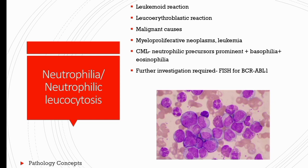When blasts in the blood and marrow are 10 to 19%, it is called the accelerated phase. When blasts are more than 20%, it is called the blast phase of CML. All patients with characteristic findings on complete blood count and peripheral smear suggesting CML should always be evaluated by FISH for BCR-ABL1 fusion or PCR for confirmation.